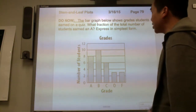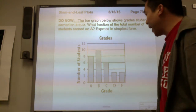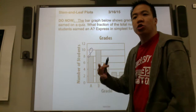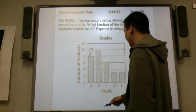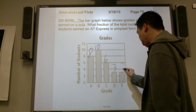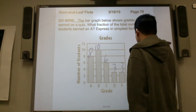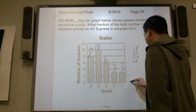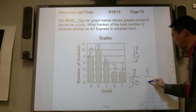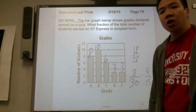The bar graph below shows grades students earned in a quiz. What fraction of the total number of students earned an A? Eight students earned an A. Ten students earned a B. Six students earned a C. Three students earned a D. Three students earned an F. Let's add this up: eighteen plus six is twenty-four, plus six more is thirty students in all. Eight out of thirty, expressed in simplest form, is four-fifteenths of the total.